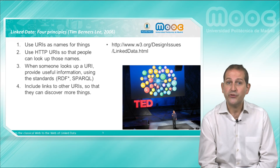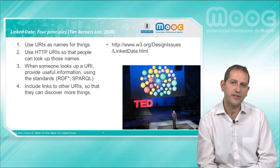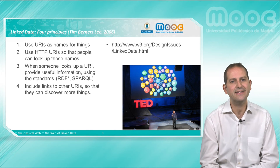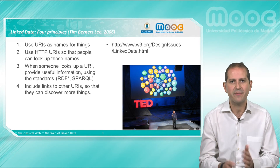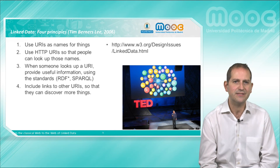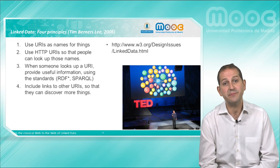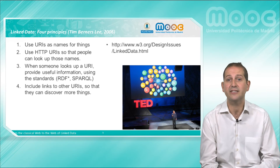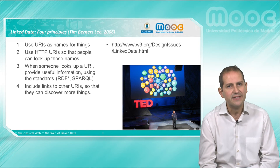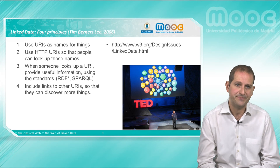The first principle is to use URIs to name anything that we want to refer to — that is, provide the universal identity, similar to the primary keys in closed databases, to all those data items that we want to expose. The second one is to make sure that those URIs follow the HTTP protocol, so that these data items will be easy to find using usual web browsers and technology.